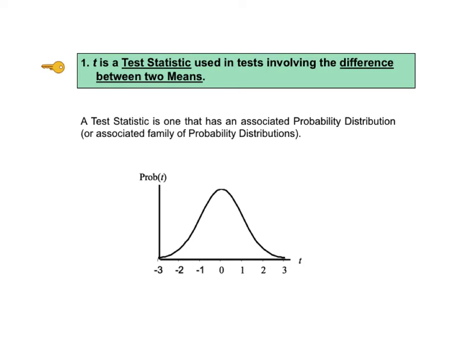A test statistic is one that has an associated probability distribution or an associated family of probability distributions. With this distribution or distributions, given any value of the test statistic, we can determine the probability of that value. More importantly, we know the cumulative probability of all values greater than or less than that particular value.